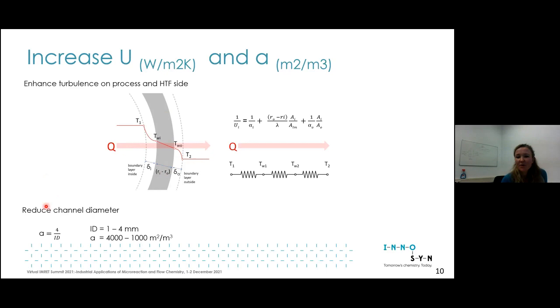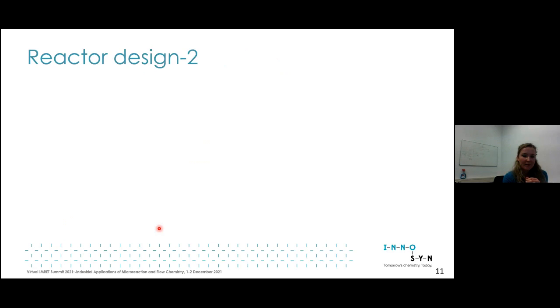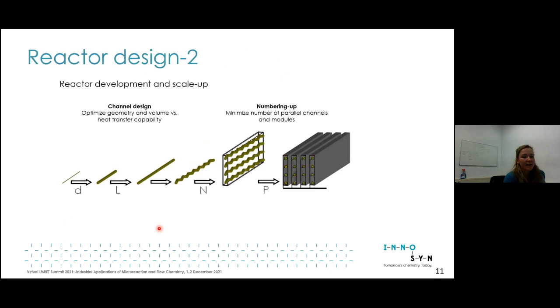You have resistance at the process side, then conduction through the wall to the cooling side. You can maximize heat transfer coefficient by maximizing turbulence on both sides. The conduction is quite high because we mostly use stainless steel reactors and the channel thickness is quite thin. The other parameter is transfer area, simply the surface to volume ratio.